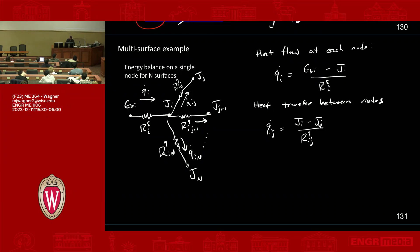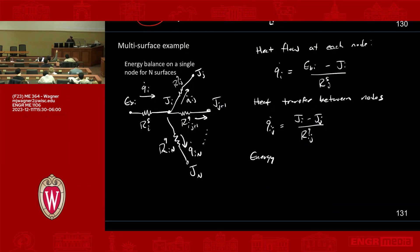Okay, so then the energy balance looks like this. The energy balance is coming in. You have EBI minus JI over RSI. That's Q dot I, right? That's what's coming in from the left.